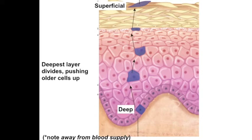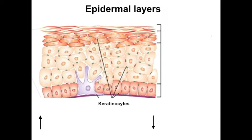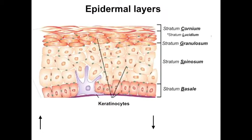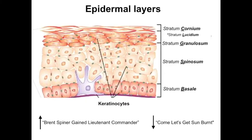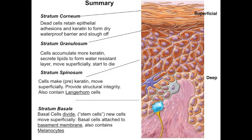We're going to go over these individual layers and note their special characteristics. You can remember these layers with the mnemonic 'Brent Spiner Gained Lieutenant Commander,' going from deep to superficial, or 'Come Let's Get Sunburned,' going from superficial to deep. I'm going to spend the most time on the most superficial and the deepest layers, and with the middle layers I'll just mention a few bullet points.